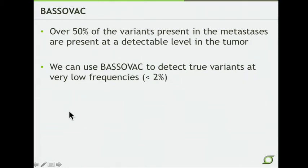Even with this 30x approach originally, we can see that 50 percent of the variants present in the metastasis are present at a detectable level in the tumor, even though we would have expected a much smaller proportion without close and deep examination using capture validation. More importantly, we can say that we can use BASIVAC to detect these true variants at very low frequencies, down to and even lower than 2 percent.